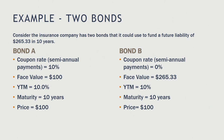Consider an insurance company that has two bonds it could use to fund a future liability of $265.33 due in 10 years. Bond A has a coupon rate of 10%, a face value of $1,000, a yield to maturity of 10%, and a maturity of 10 years. Bond B is a zero coupon bond with a face value of $265.33, a yield to maturity of 10%, and a maturity of 10 years, meaning it will pay $265.33 in 10 years.